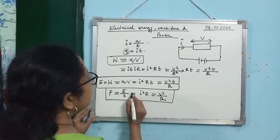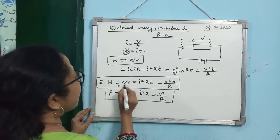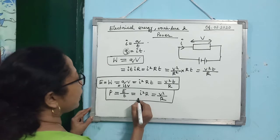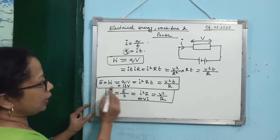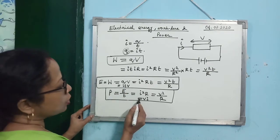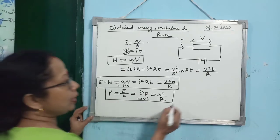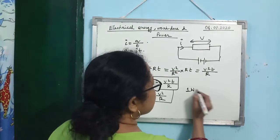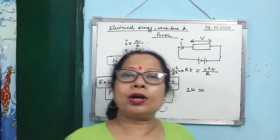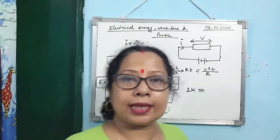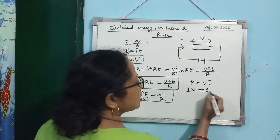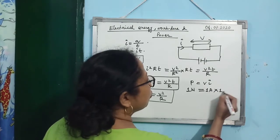Since W = QV = ITV, electrical power can also be written as P = VI. We define 1 watt as: if 1 ampere of current passes through a potential difference of 1 volt, then the electrical power consumed is 1 watt. So 1 W = 1 A × 1 V.